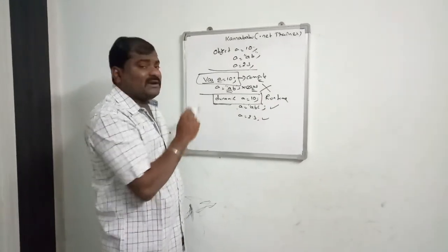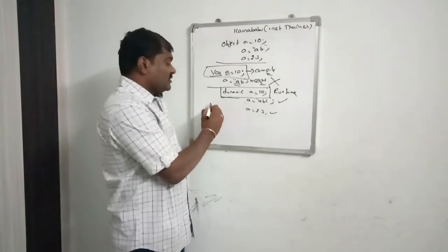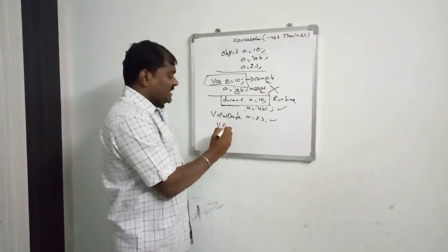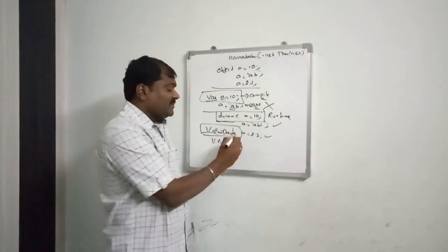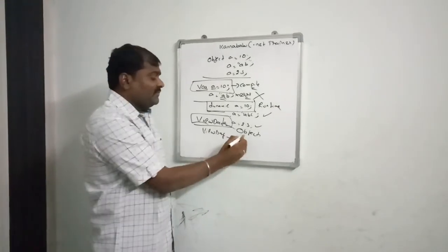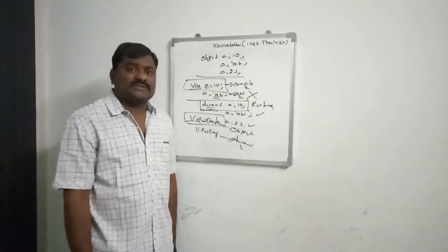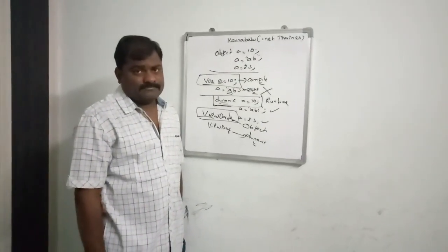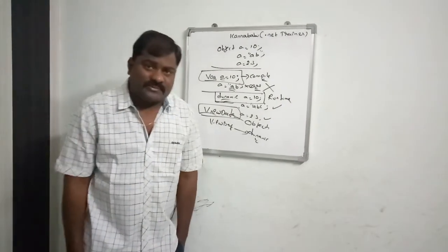Dynamic is used mostly in MVC. In MVC we have the concepts ViewData and ViewBag. ViewData maintains data in the form of object type, and ViewBag maintains data in the form of dynamic type. Dynamic is a powerful feature introduced in C# .NET 4.0. I hope you understood. For more videos, you can subscribe to my YouTube channel and Facebook group. Thank you.